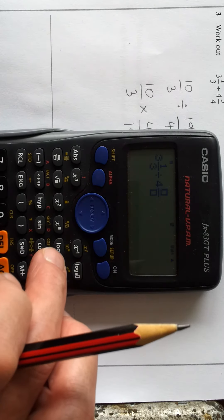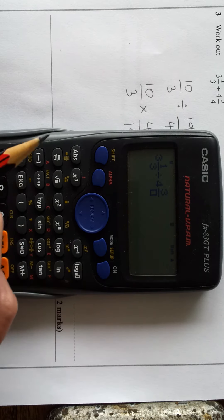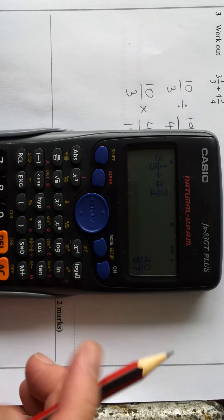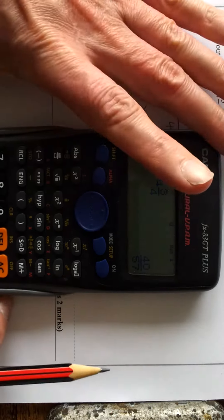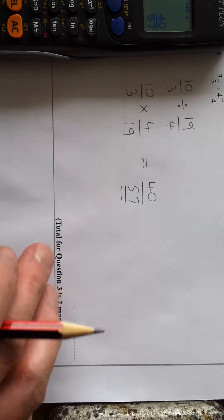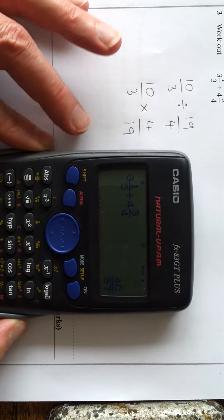Across on the right, replay button, three and four, making four and three-quarters. Press equals and we get forty over fifty-seven, which is the same answer. So you can do it either way.